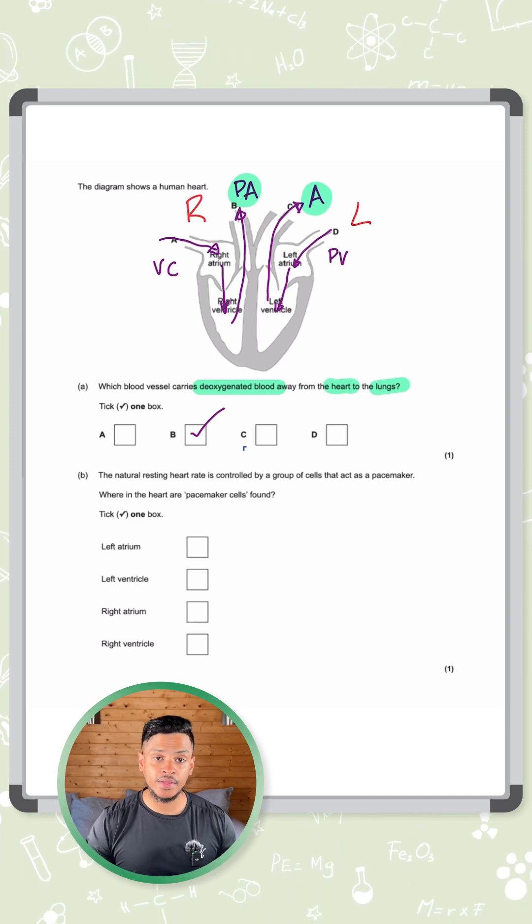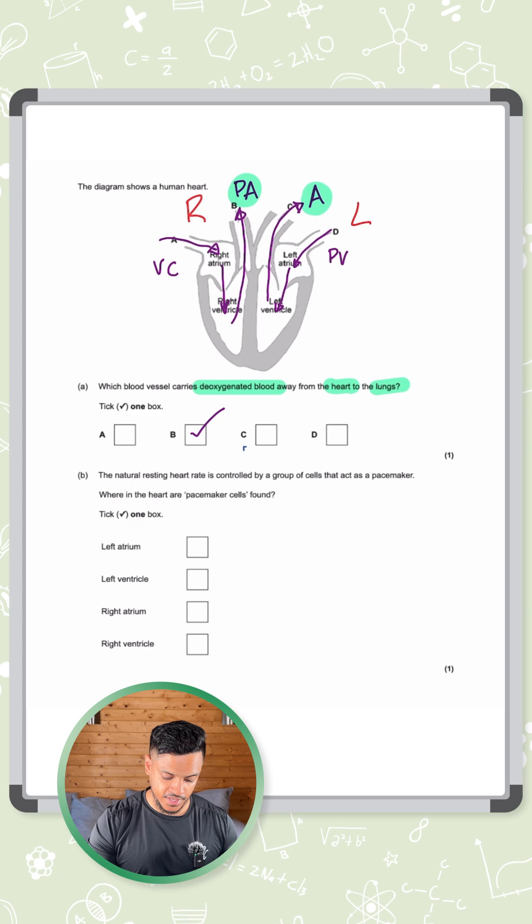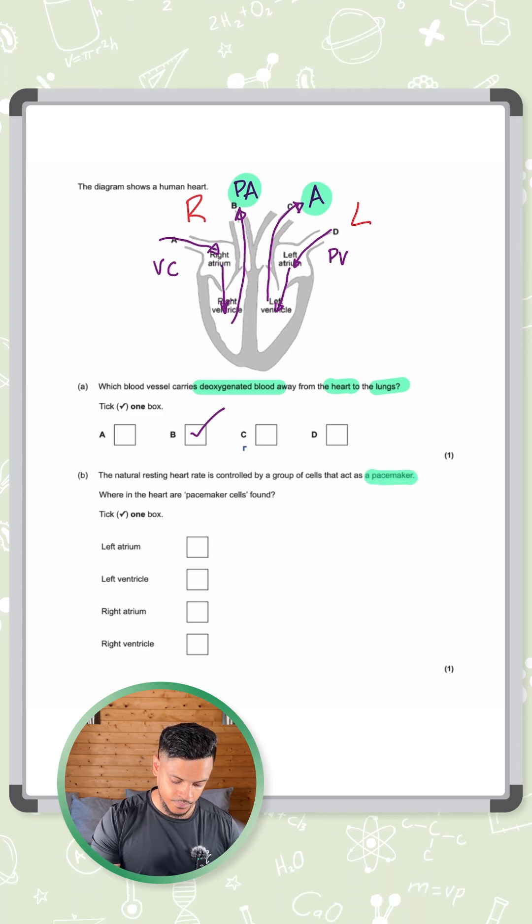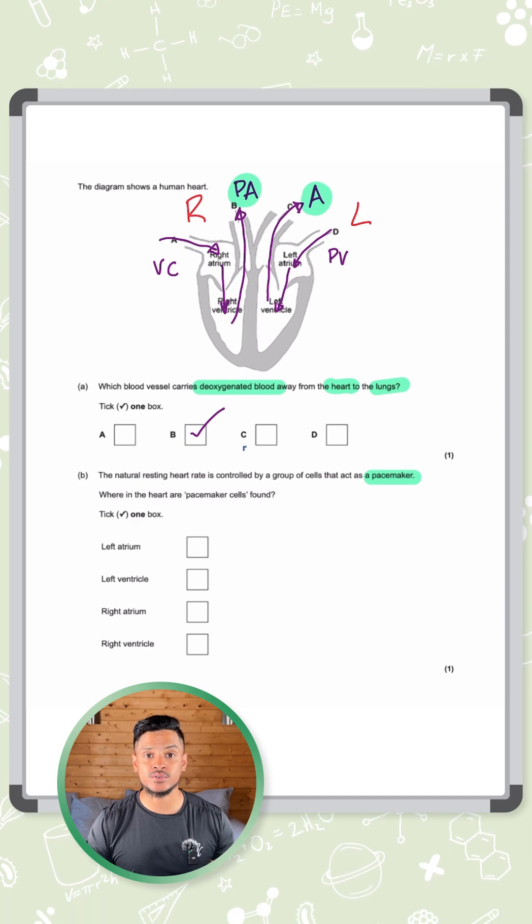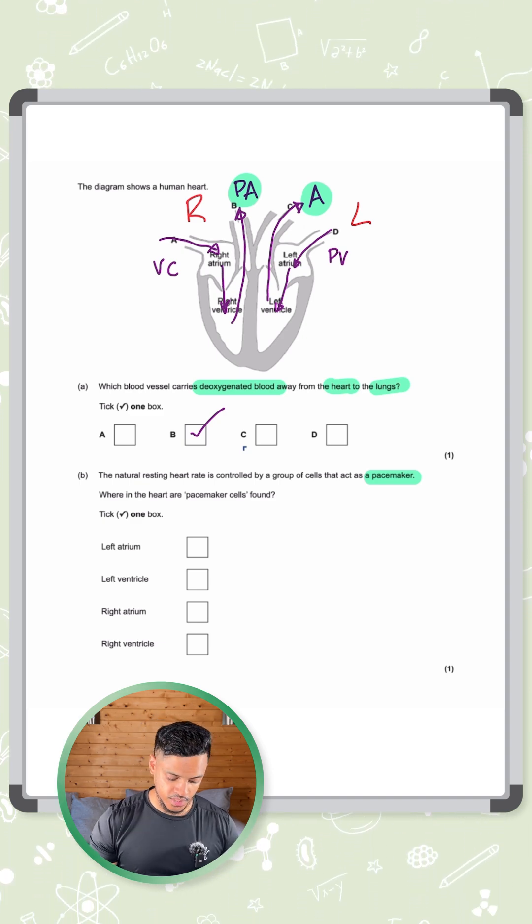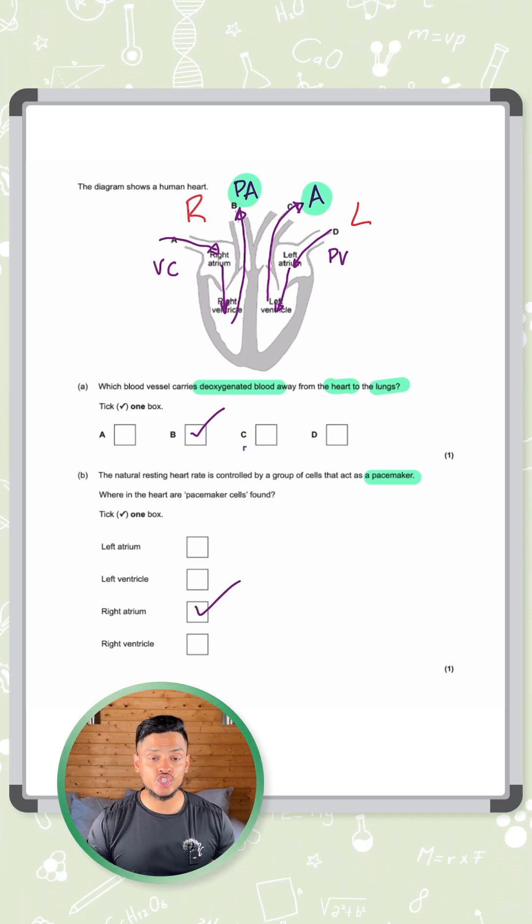Now part B is talking about the natural resting heart rate. It's controlled by a group of cells that act as a pacemaker. This is just a memory question. It asks where in the heart are pacemaker cells found. This one you just need to memorize. It's the right atrium. That's how you get two marks there.